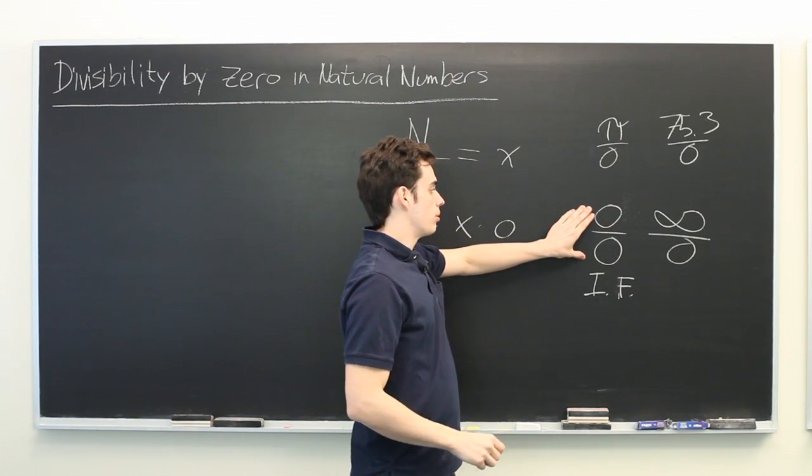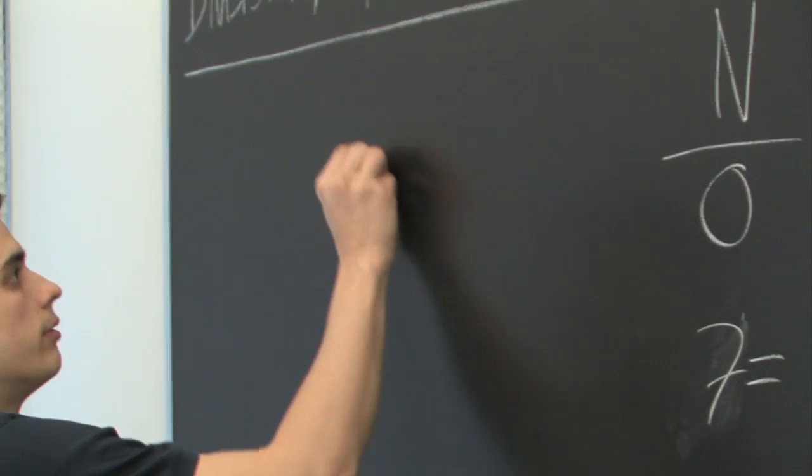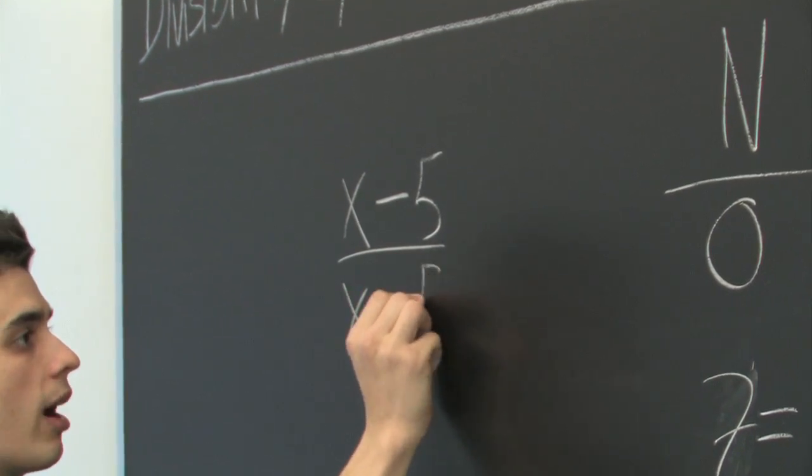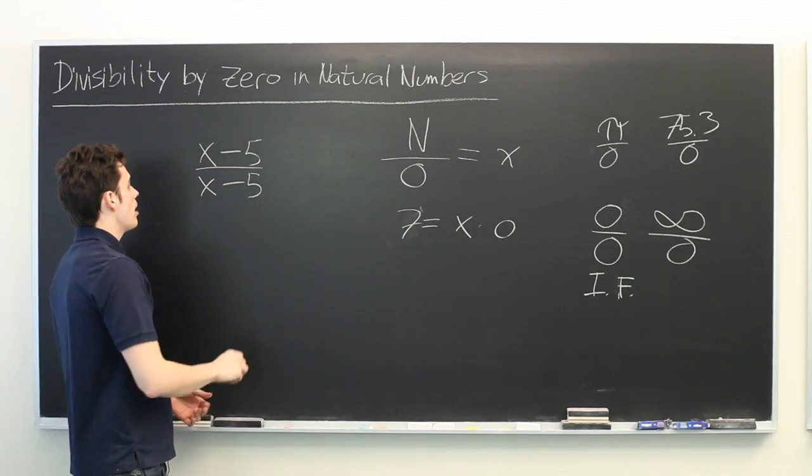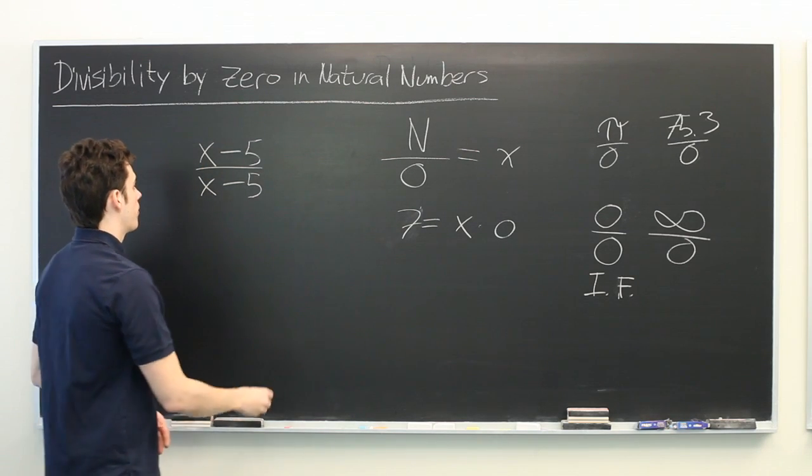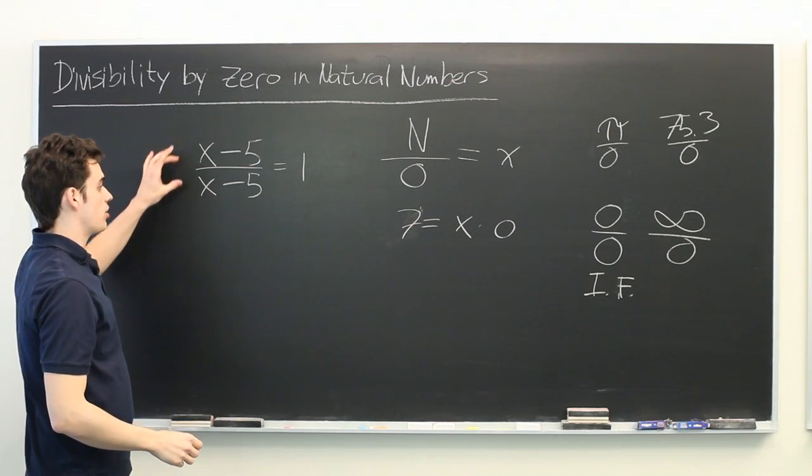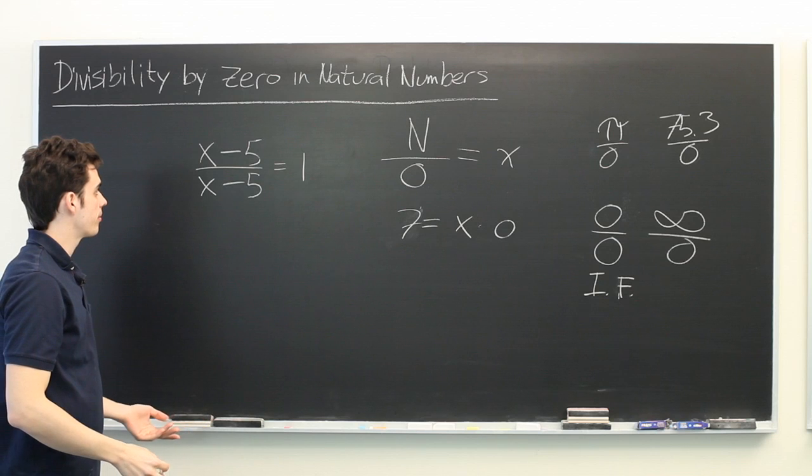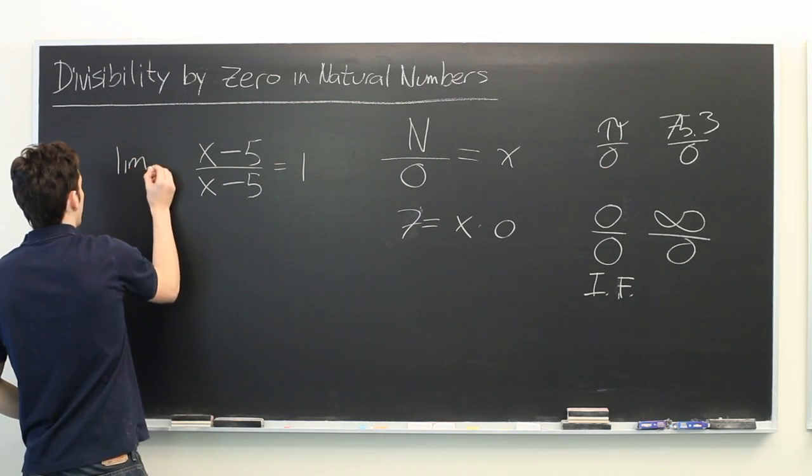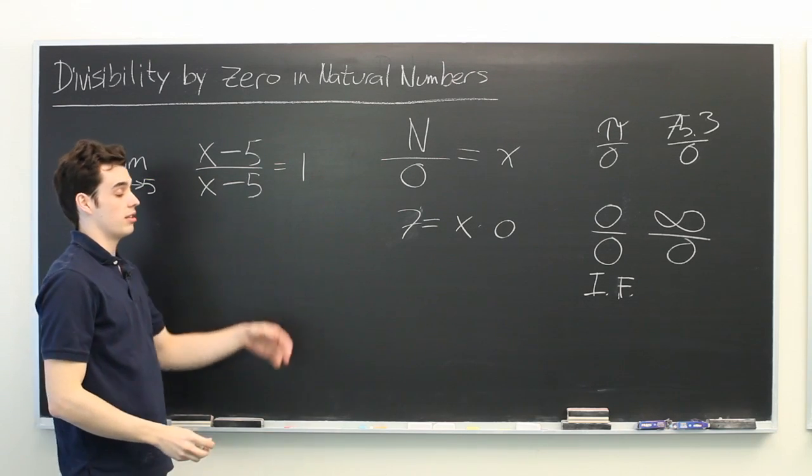What these evaluate to depends on the context in which they come up. For example, if you look at the expression (x-5) over (x-5), at all values of x besides 5, this will give you 1. But if you plug in 5, you get zero over zero, which is an indeterminate form. But if you take the limit as x approaches 5 of this expression, you'll find that it is indeed 1.